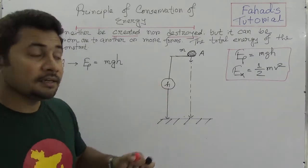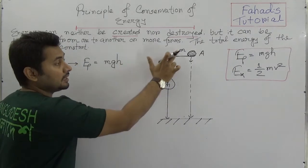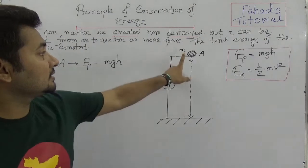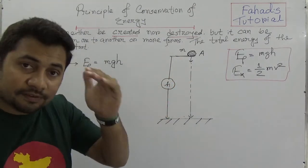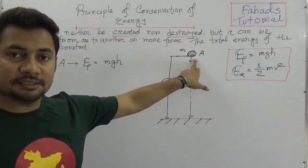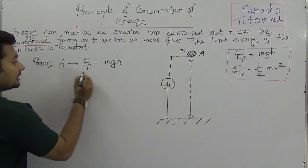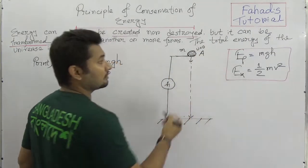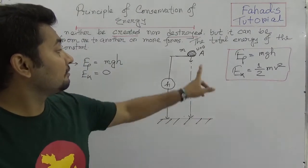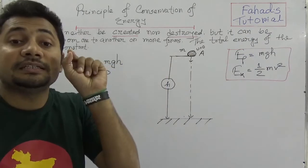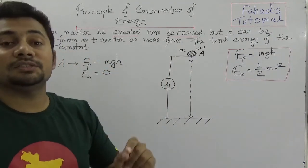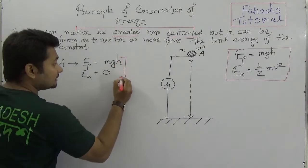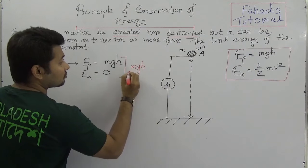Whether the height is 20 meters, 50 meters, or any value, and whether the mass is 20 grams, 1 kilogram, or any given value, with G equal to 9.8 you can calculate the potential energy. Importantly, at point A the kinetic energy is zero because there is no velocity — the object is at rest. So at point A, all the energy is MGH.